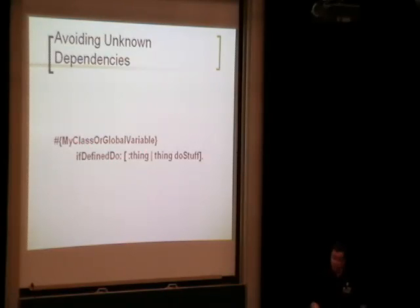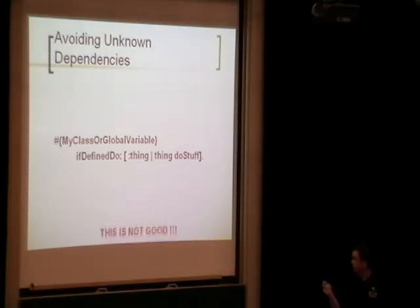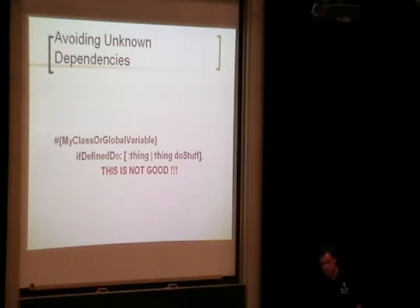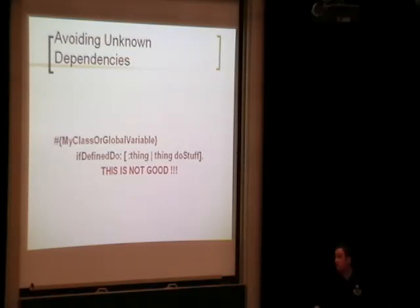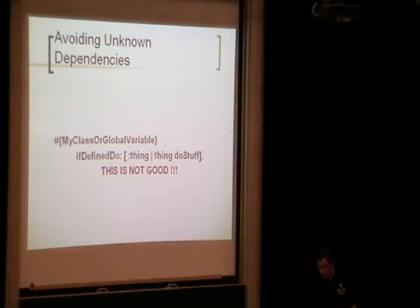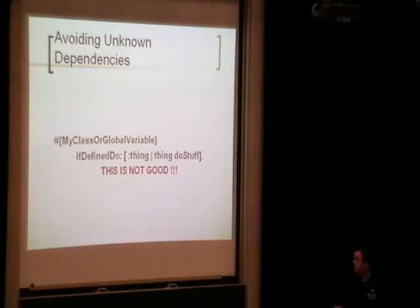One way to avoid unknown dependencies is to add a check like: if a class or global variable exists, run this code. But this is not good practice. Think of it like a computer booting — if it doesn't find a network card and silently skips it, you start using the system with no network and can't figure out what's wrong. If you actually get an error during load, it's much easier to investigate than to remember a check you wrote a year ago that causes a silent failure.